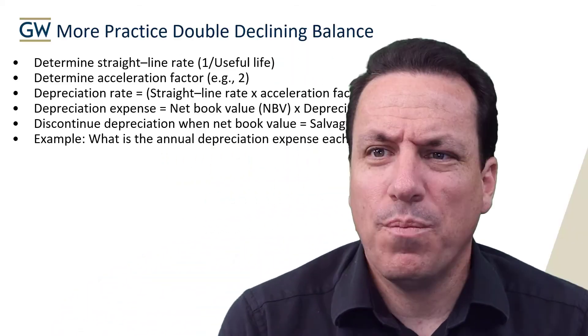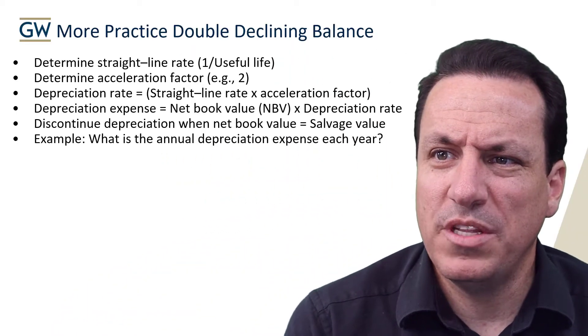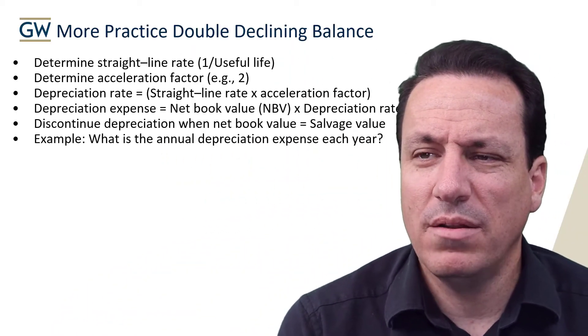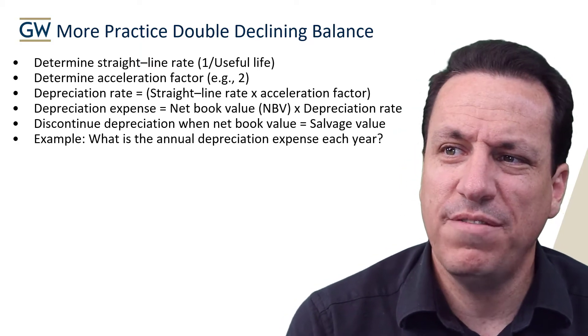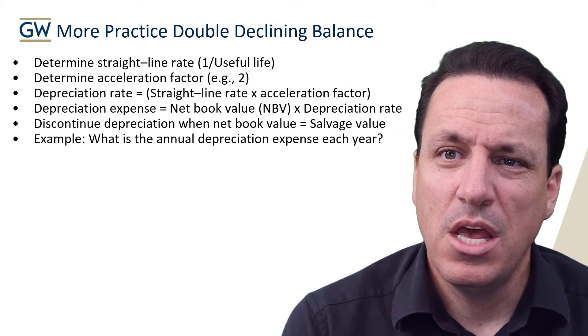In this video, we're going to go through an additional example of the double declining balance over more periods, just so that you have more material to review. In the process, we determine the straight line rate, which is one over the useful life of the asset.